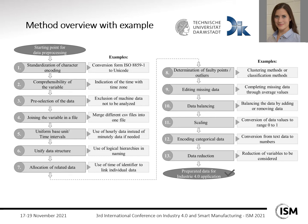The third step is the pre-selection of the data. To handle big data, you can, for example, exclude machine data which are not going to be analyzed. The fourth step is joining the variables in a file — for example, you can merge different CSV files into one file, so you don't have to handle different files, which can minimize the occurrence of errors.